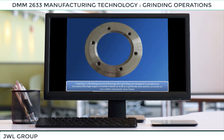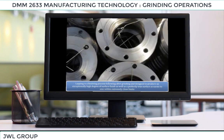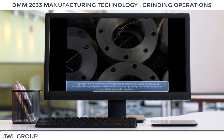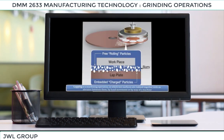Lapping is a finishing process following after grinding and is designed to produce an exceptionally high degree of surface finish as well as a perfectly true surface, accurate to size within extremely close limits. In some work the finish is more important than the dimensional accuracy. Lapping is a machining operation in which two surfaces are rubbed together with an abrasive between them, by hand movement or by machine.